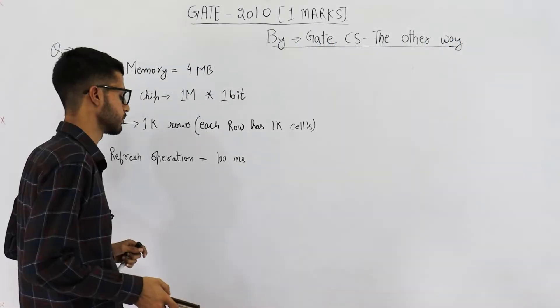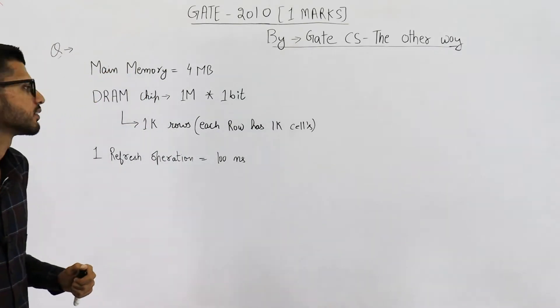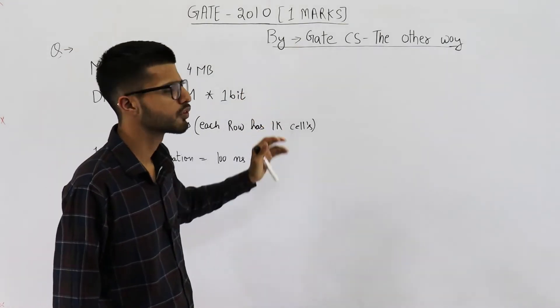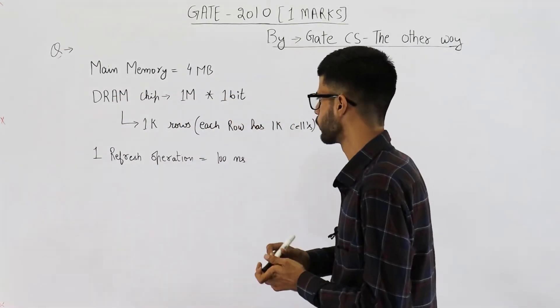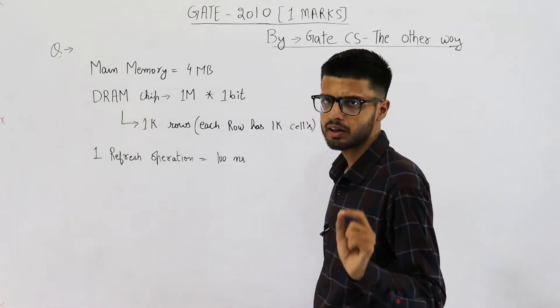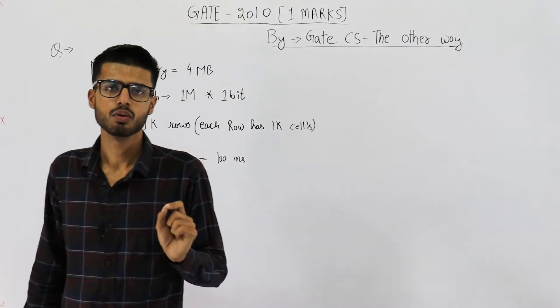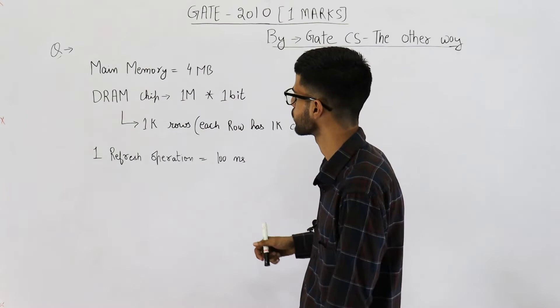So let's solve this one. If you are only concerned about the answer, it's a really simple question. You don't even need this information for finding out the answer. Let me show you what I'm saying. You might know that we refresh DRAM chips row by row. That's the only thing that you need to know for solving this question.